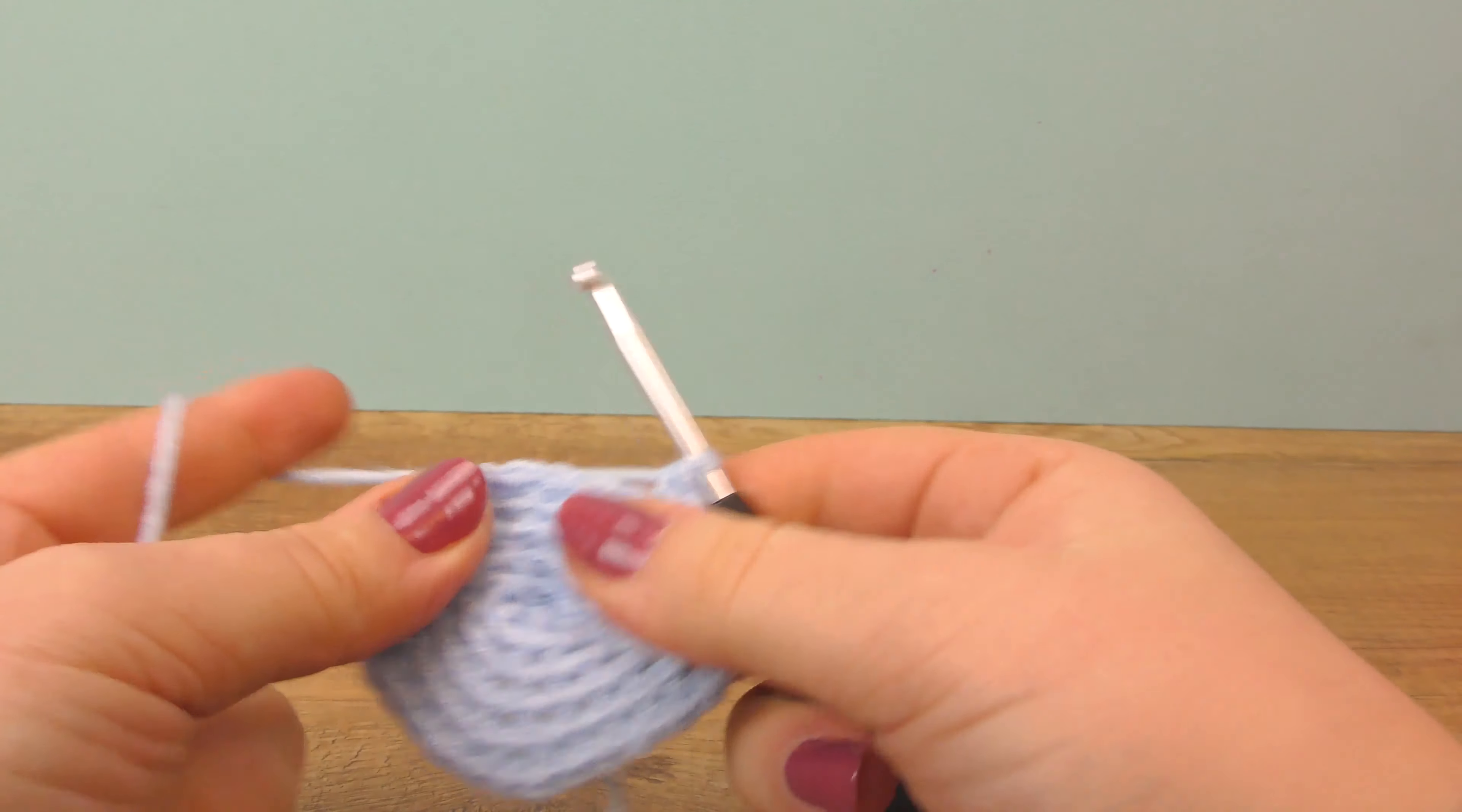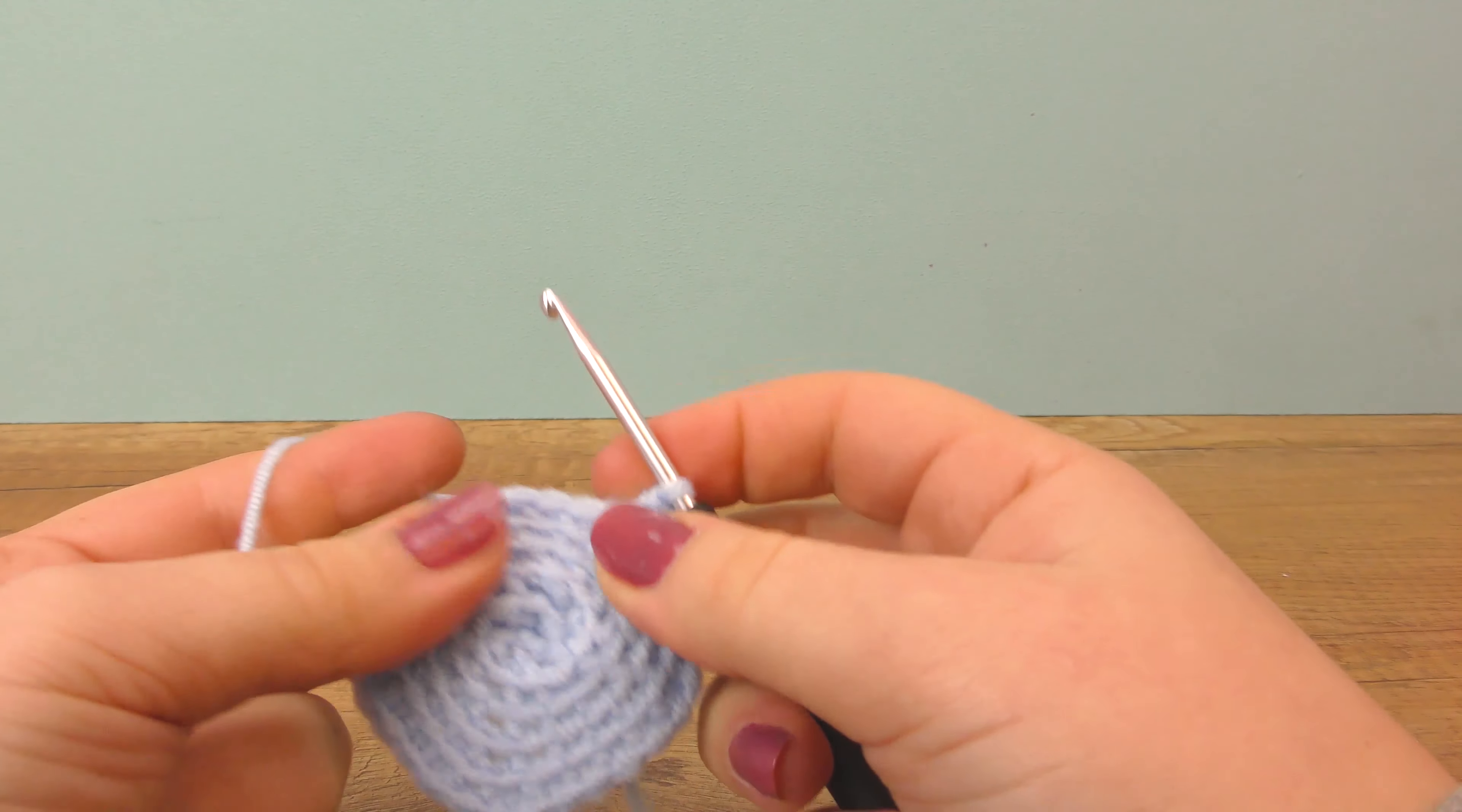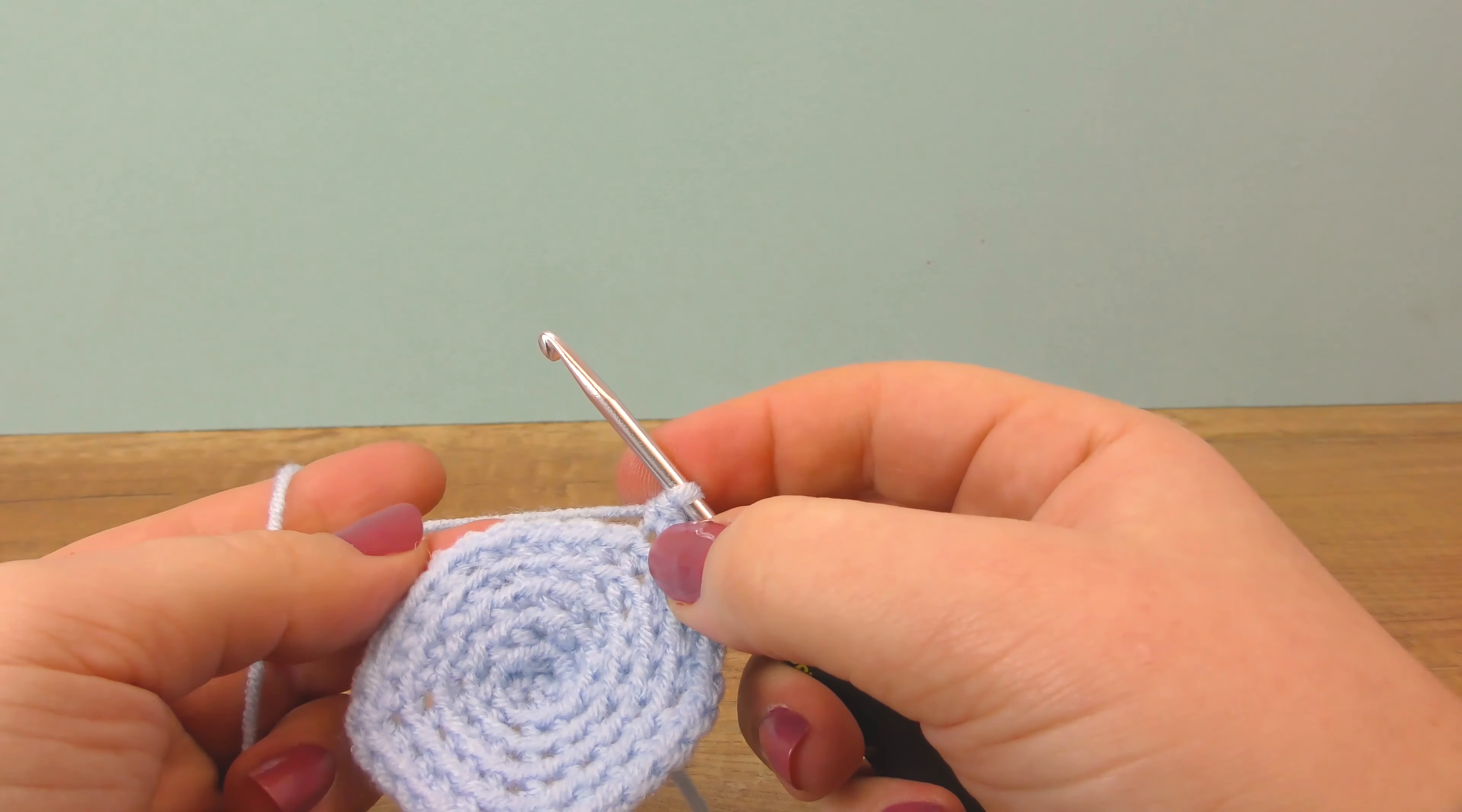Okay, so now we have our circular basis and now we just need the five points here. So you can do them individually, but I'll also show you how you can do them directly on here so that you don't have separate pieces. So first we are gonna need six singles into the first six chains.